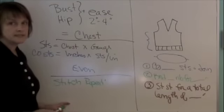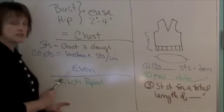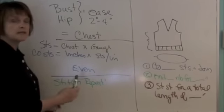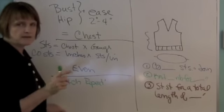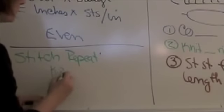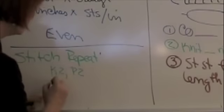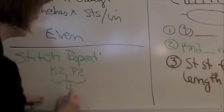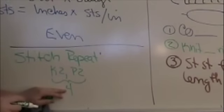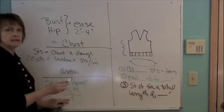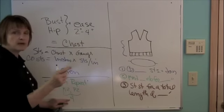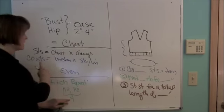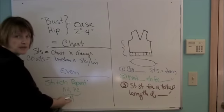The last thing we need to consider in our number of cast on stitches is something called stitch repeat, which is simply the number of stitches in a pattern. For example, a knit two, purl two rib is going to be a stitch repeat of four stitches. In order for our bottom ribbing to come out an even number of pattern repeats, our cast on needs to be divisible by the number of stitches in our ribbing stitch repeat.